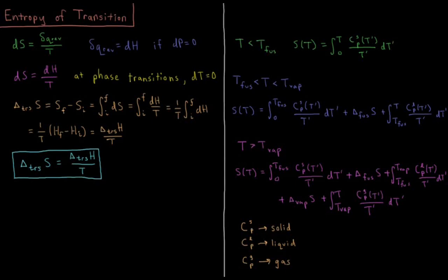This video will discuss the entropy of transition. For a reversible process, we have defined that the change in entropy over some small perturbation in the state of the system, ds, is equal to dq_rev over T — the heat that occurs during that small change divided by the temperature of the system.